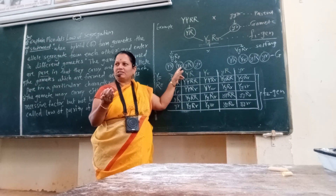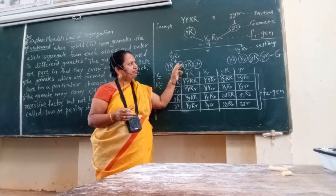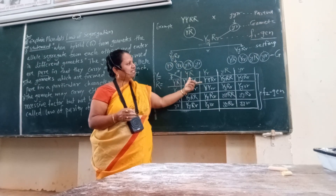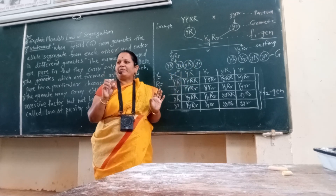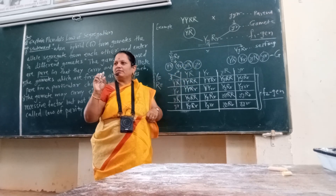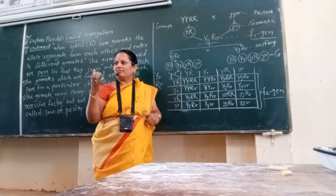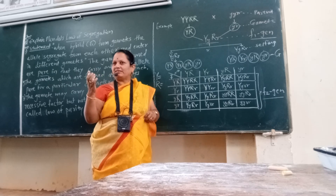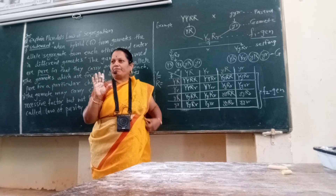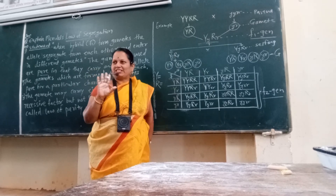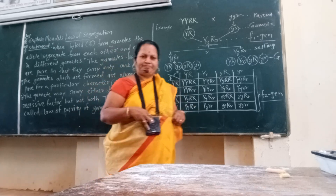This connects to another law — the law of independent assortment. The law of segregation states that gametes are separated in pure form and consist of characters in pure form. Therefore, this law is also called the law of purity of gametes. Thank you.